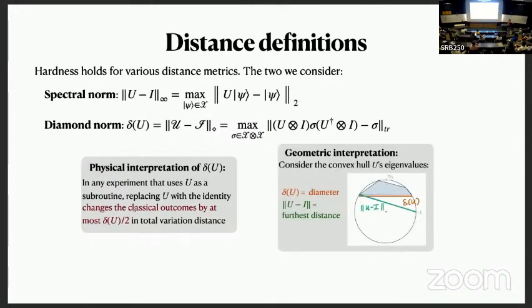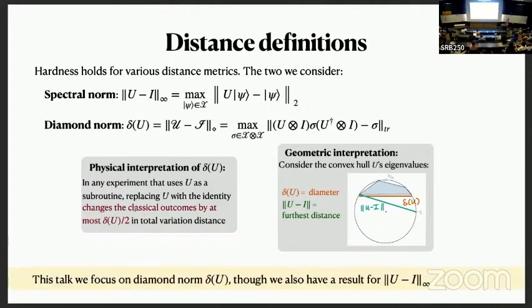There's also a geometric interpretation of these two norms. A unitary U has all of its eigenvalues on the unit circle. The diamond distance is like the diameter of the polygon formed by the convex hull of all the eigenvalues. The spectral norm distance is the length to the furthest point from one. In this talk, we're going to be focused on diamond norm, which we call delta of U, though in our paper we also have a result for the spectral norm.